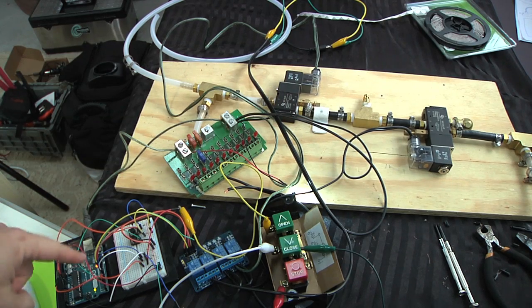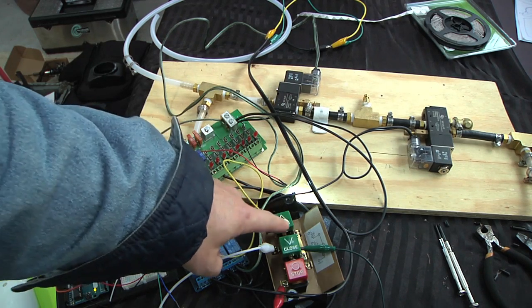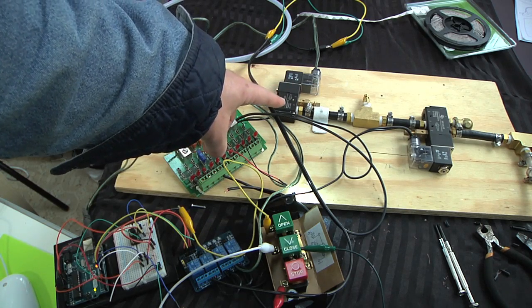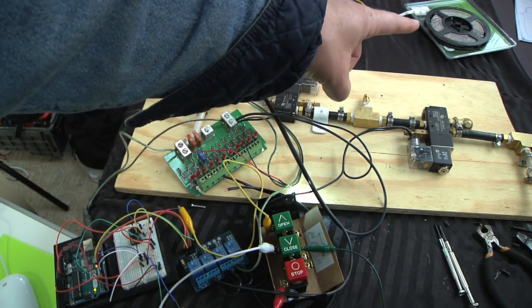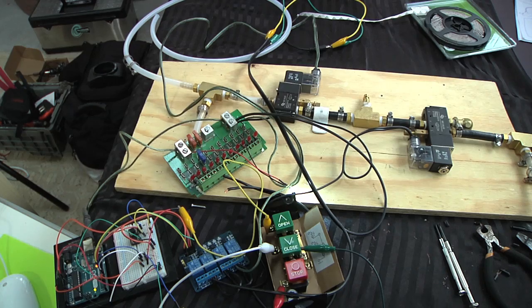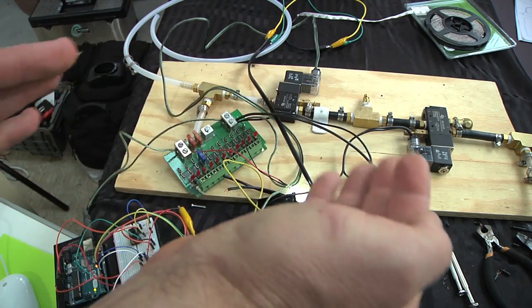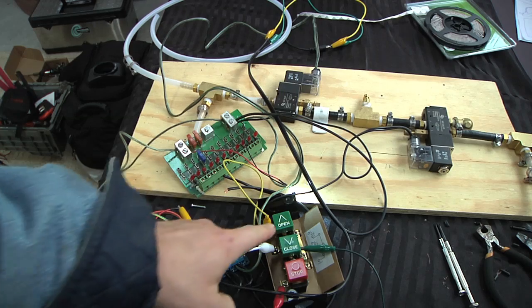So then in the code on the Arduino, I told it if I press the open button, then turn on the open air valve and also turn on that LED strip light and leave them both on for a moment. That gives enough time for the air cylinders to open the door fully. So let's see that.